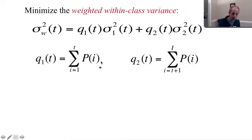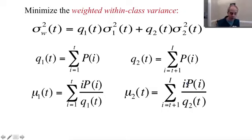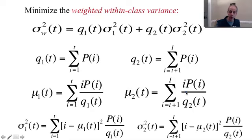And then we get the probability for class 1, the probability for class 2. Then we simply get the means for class 1 and for class 2. And then we also get the variance for class 1 and the variance for class 2. And in such a way, we obtain the weighted within class variance, which is here. And that's what we want to minimize.